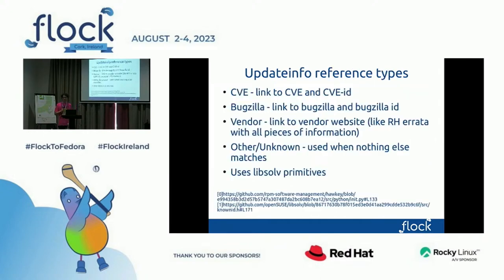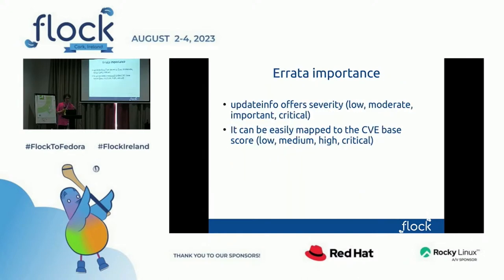When you think about the reference type, it can be CVE, Bugzilla, vendor, or unknown. But if you look inside the code — the library libdnf or libsolv — libsolv actually accepts anything, and libdnf can actually make these types of references. So if you want to have your own type, it's quite easy — very easy. There is the errata importance as I said, and it can easily be mapped to the CVE because the CVE scoring has brackets: low, medium, high, critical.